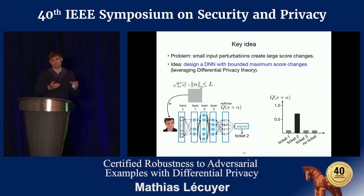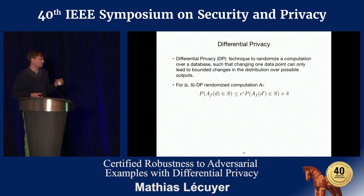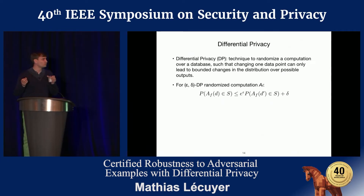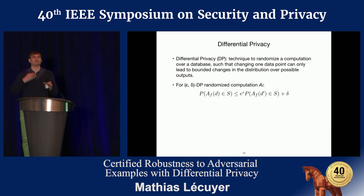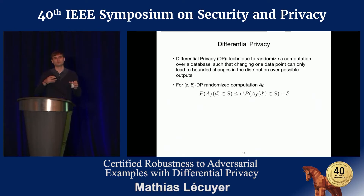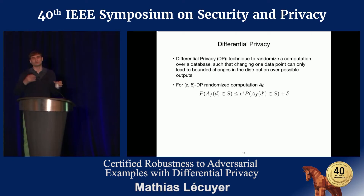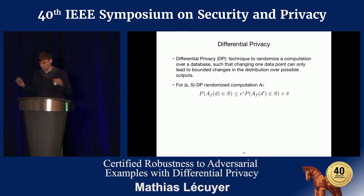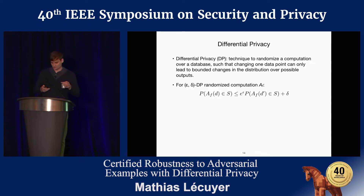This is where we leverage differential privacy. Differential privacy is a technique to randomize computation — typically on a database — such that changing one row leads to bounded changes in the distribution over possible outputs. Intuitively, if you're counting people in a database with a given attribute, adding or removing one row can only change that count by at most one. Adding a bit of noise makes it hard to tell whether the algorithm ran on the database with or without the extra person, and this bound is expressed in the differential privacy formula.